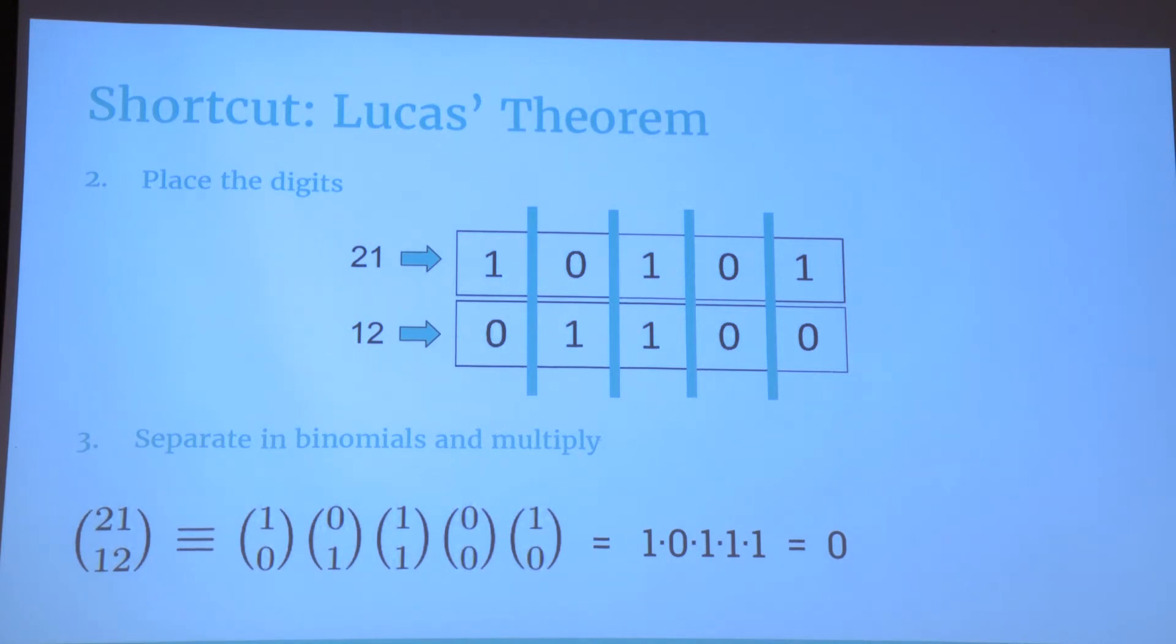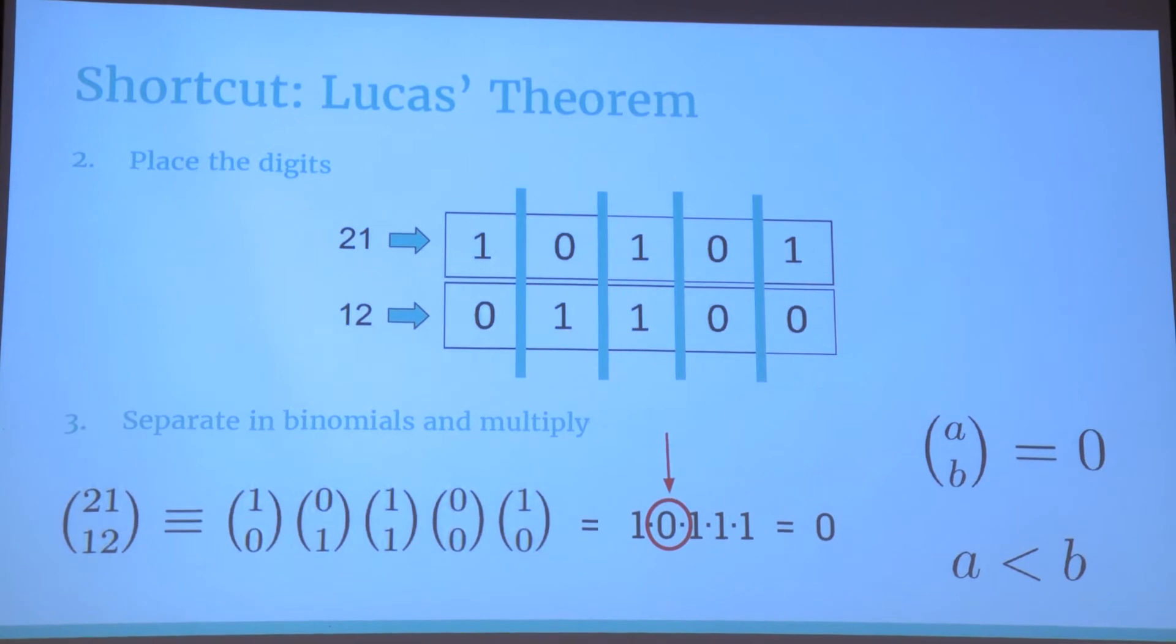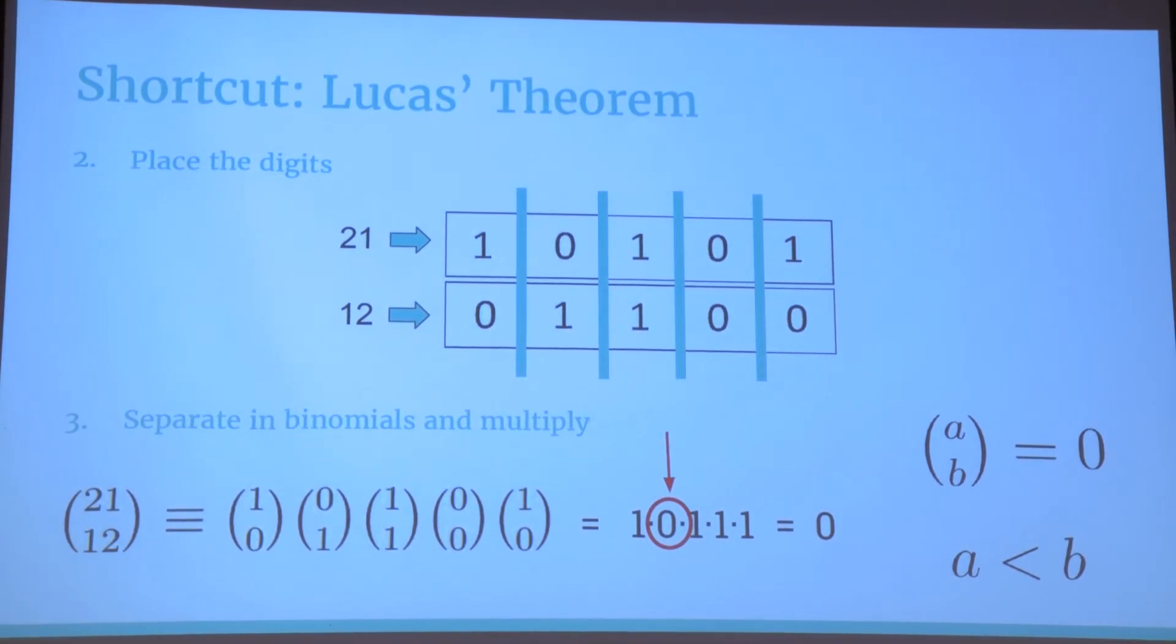Note that for our problem, we want this number to be 0, because if the remainder is 0, then n choose k is divisible by the prime p, which is what we want, because if it's divisible by p, then it is painted by p. And we want n to satisfy condition 1. If any of these little binomial coefficients is 0, then everything gets multiplied by 0, and we get the remainder that we want. The question is, when does it happen?